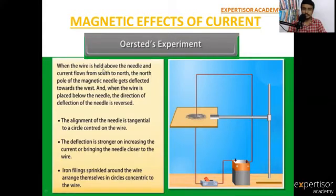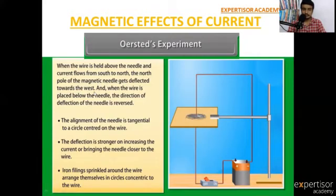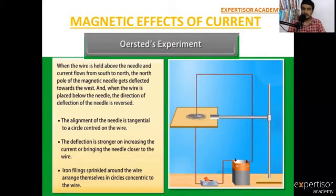See the procedure: when the wire is held above the needle and current flows from south to north, the north pole of the magnetic needle gets deflected towards the west. When the wire is placed below the needle, the direction of deflection is reversed. When iron pieces are brought near to the current-carrying wire, they are arranged in a parallel or circular pattern.